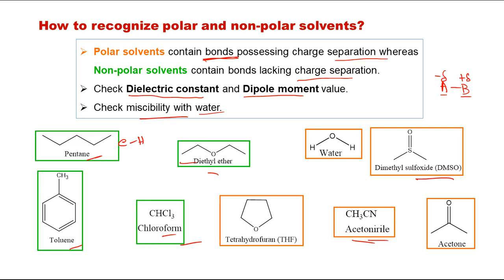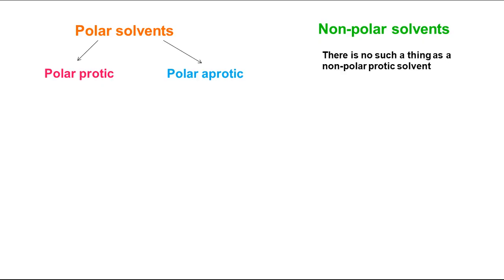Under polar solvents, there are two types: polar protic and polar aprotic. Under non-polar, there is no further division because non-polar solvents are always aprotic — there is no active hydrogen present. That is why there are exactly three types total: polar protic, polar aprotic, and non-polar.